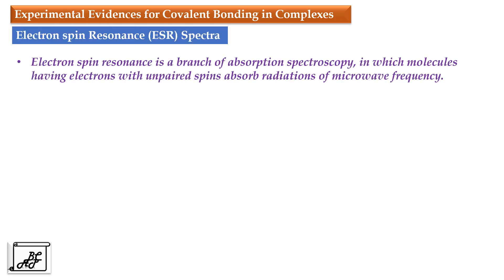Electron spin resonance spectroscopy is a branch of absorption spectroscopy in which molecules having electrons with unpaired spins absorb radiations of microwave frequency. We have to remember that ESR can be applied only to those molecules which contain unpaired electrons. Hence the diamagnetic molecules cannot be studied using ESR spectroscopy. ESR spectroscopy basically depends upon the spin of an electron.